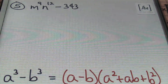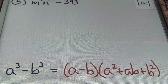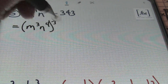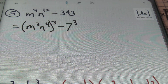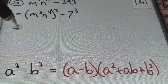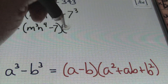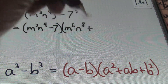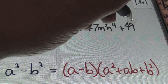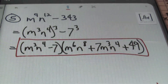Problem number 5: m to the 9th power times n to the 12th power, minus 343. There's the formula — keep writing it. What's being cubed is m cubed n to the 4th power in the first term, and the number 7 in the second term. Treating m cubed n to the 4th as my a value and 7 as my b value, I end up with m cubed n to the 4th power minus 7, times m to the 6th power n to the 8th power, plus 7m cubed n to the 4th power, plus 7 squared, which is 49. That's the answer — done and done, ladies and gentlemen.